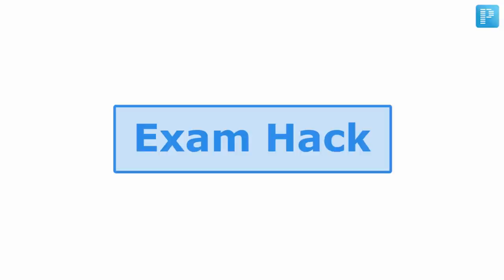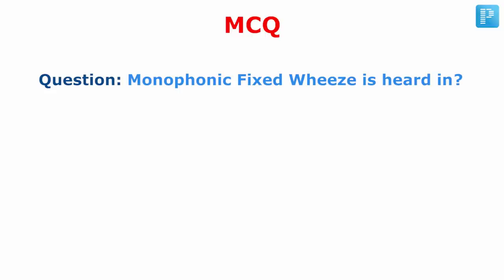The MCQ will say monophonic fixed wheeze is seen in... You will notice that in asthma the wheeze is heard in expiration and is polyphonic — meaning variable intensity. But a monophonic fixed wheeze is heard both in inspiration and expiration, and the answer would be lung cancer — an endobronchial mass causing physical obstruction of the airway.